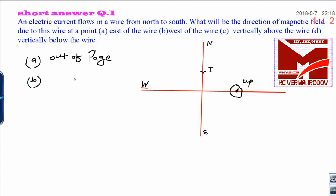Now part B of the same question. West of the wire. West of the wire means the field will go inward in this direction. That is why you have to put the cross. I can write this is into the page.